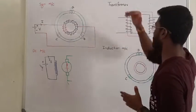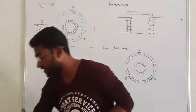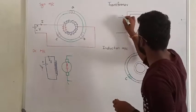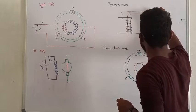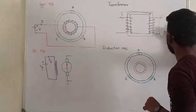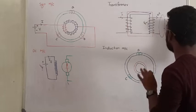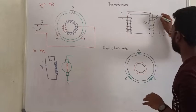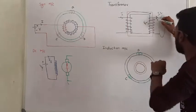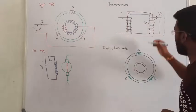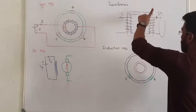Next, transformer. When we give supply on the primary side, there will be a flux. On that flux, the secondary EMF is induced. Suppose on the secondary level you connect a load — secondary current is zero at no load. When the moment we connect the load, secondary current flows and produces a secondary flux.